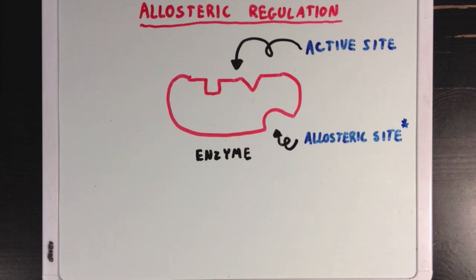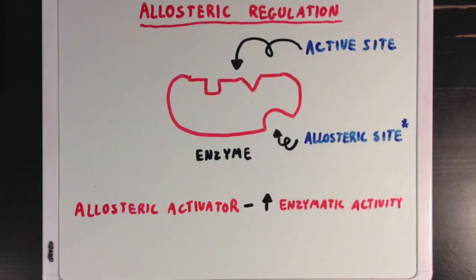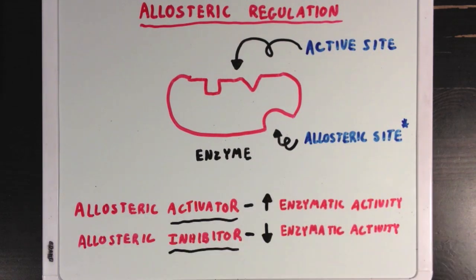So, what do we mean when we say regulators? Well, we generally say that there are two types of regulators. There are allosteric activators, which increase enzymatic activity and activate them, and allosteric inhibitors, which decrease enzymatic activity and inhibit the enzymes.